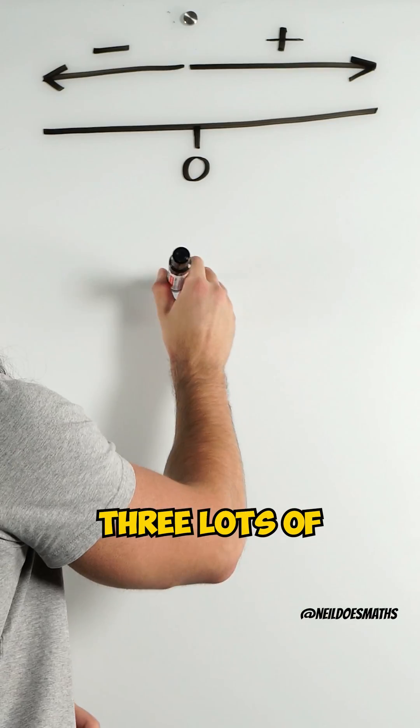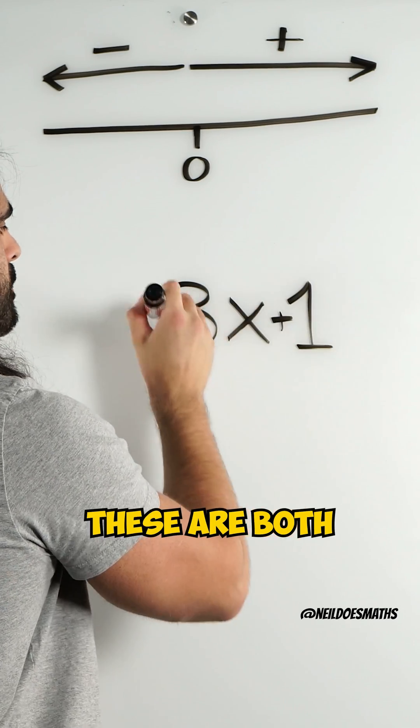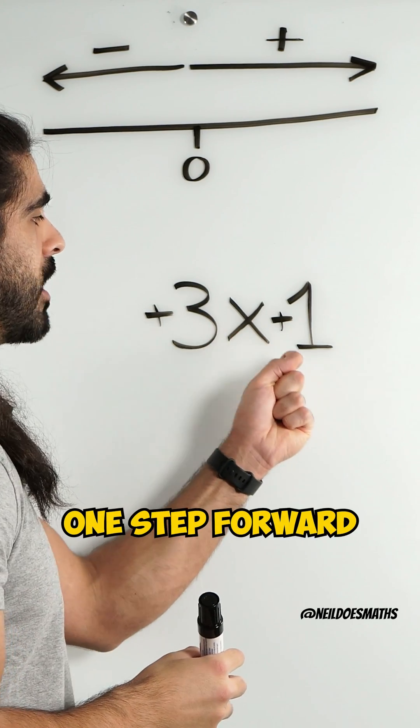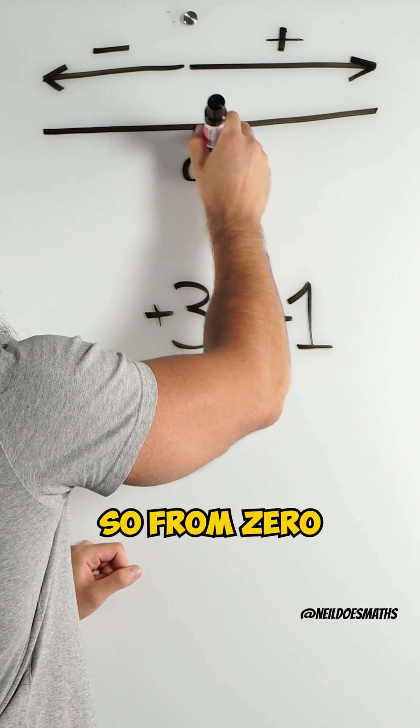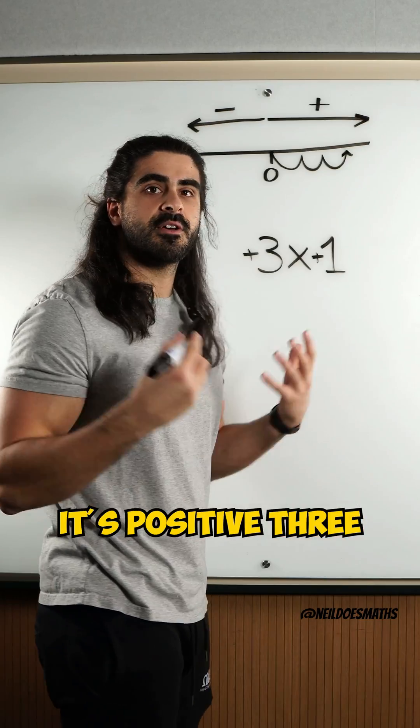Let's take a look at 3 lots of 1. These are both positive. So I'm doing 3 lots of 1 step forward. So from 0, I'm jumping 3 steps forward. It's positive 3.